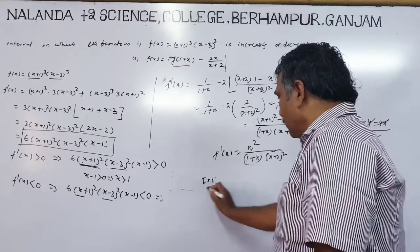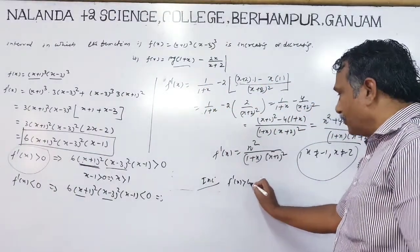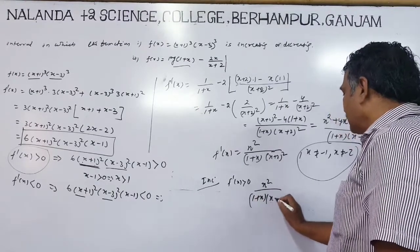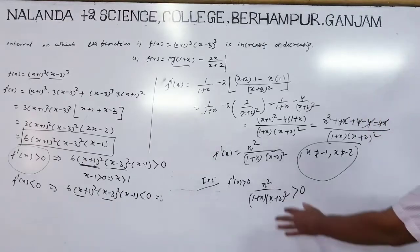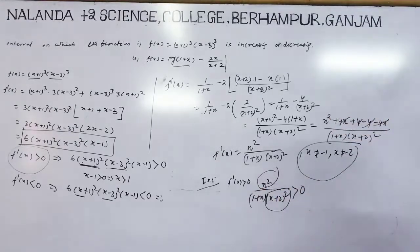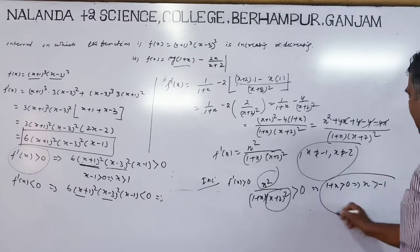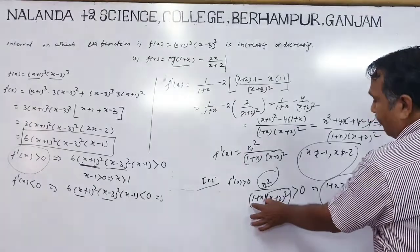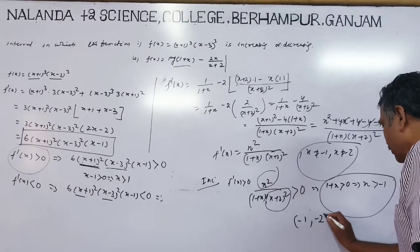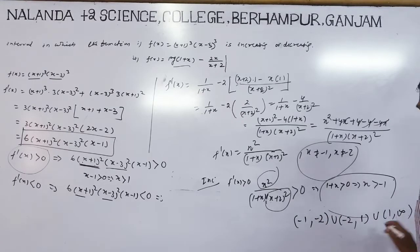For increasing function, f'(x) greater than 0. So x²/[(1+x)(x+2)²] greater than 0. Since x² is always non-negative and (x+2)² is always positive, we need (1+x) greater than 0, so x greater than -1. The increasing interval is (-1, ∞) excluding x = -2 and x = 0, written as (-1, -2) union (-2, 1) union (1, ∞).